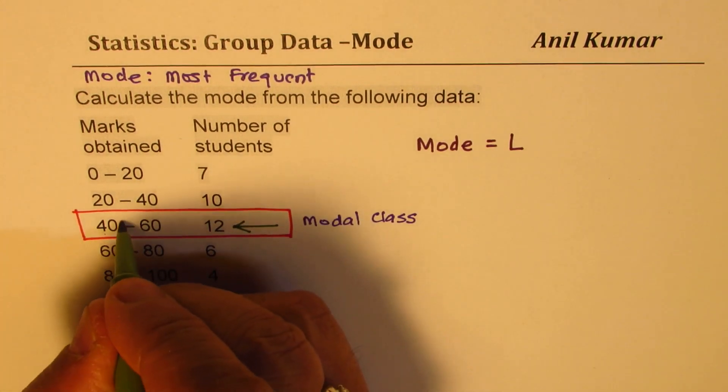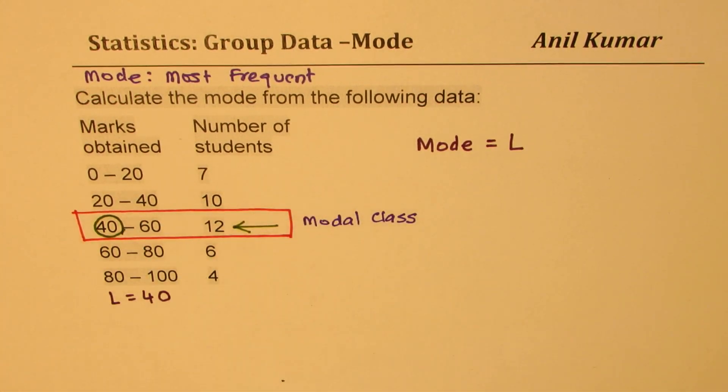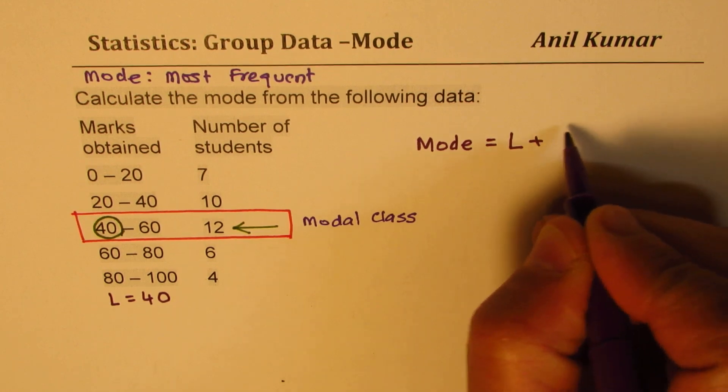So the formula is L plus something. This something in the numerator, we have difference in frequencies.